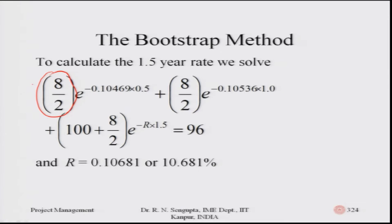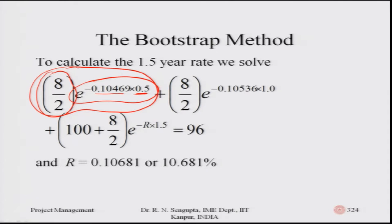You need to find the present value of that amount as of now using the time value of money with continuous compounding. The rate found was 10.469, so you multiply by e to the power of minus 0.10469 — the interest rate — multiplied by 0.5, the time period. This gives the present value for the four rupees received after six months.